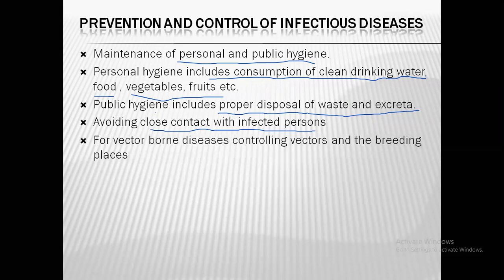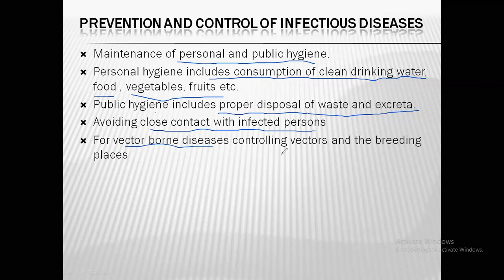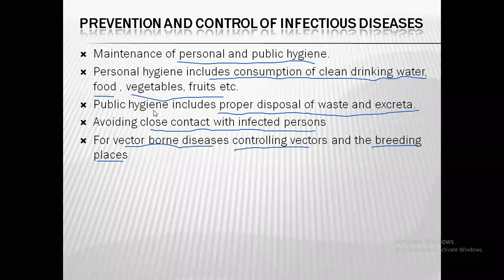For vector-borne diseases, controlling the breeding of vectors is very important. Mosquitoes, for example, are vectors for many diseases — dengue, chikungunya, malaria, and filaria. You have to identify their breeding places and find ways to control their population. This is a very important part of prevention of these kinds of diseases.